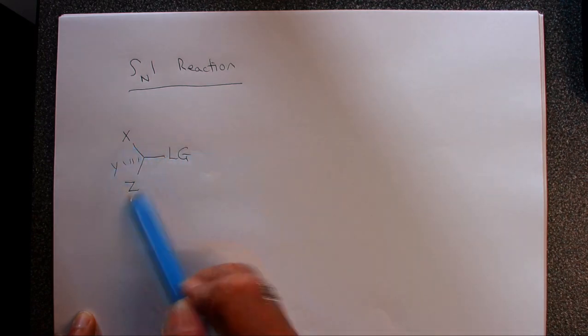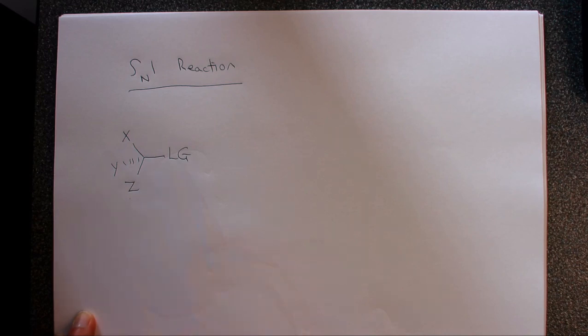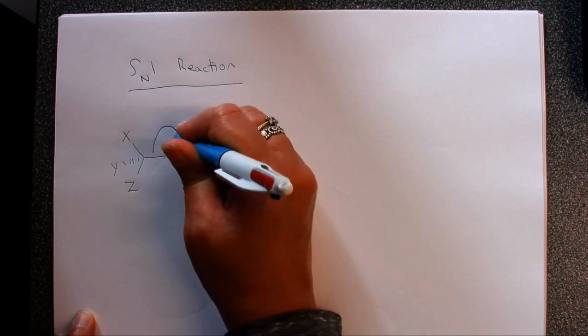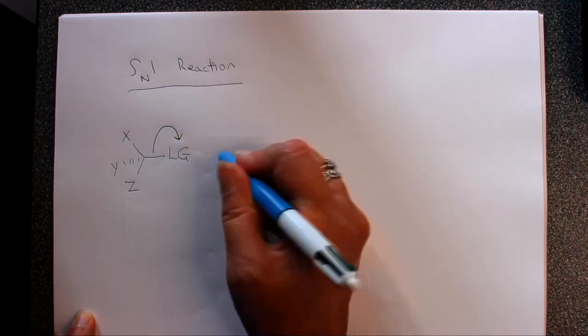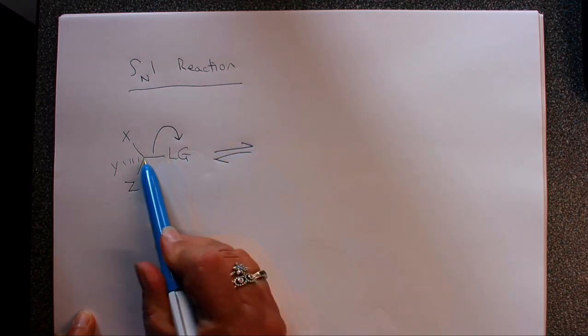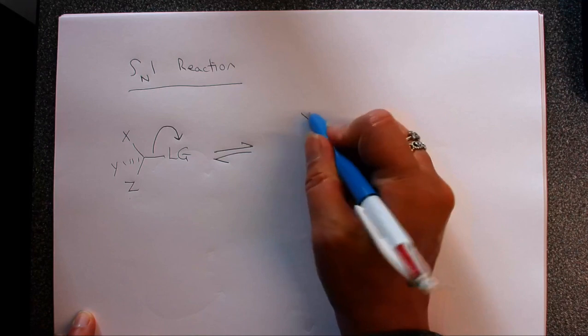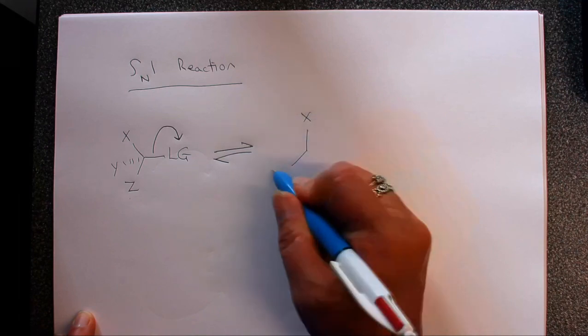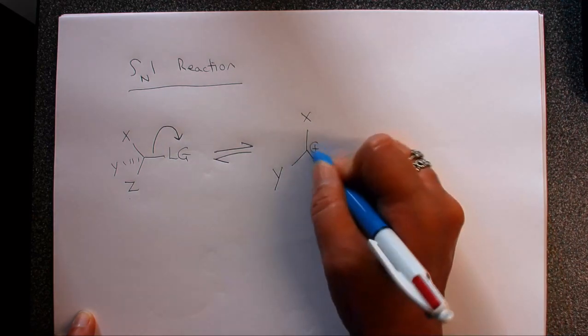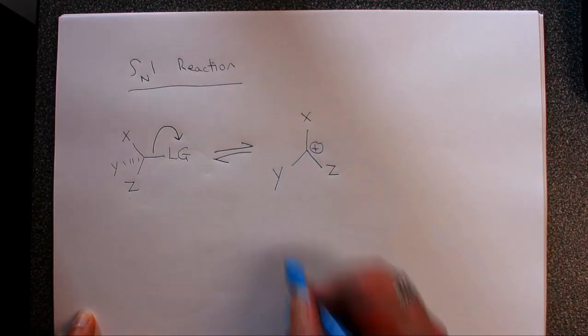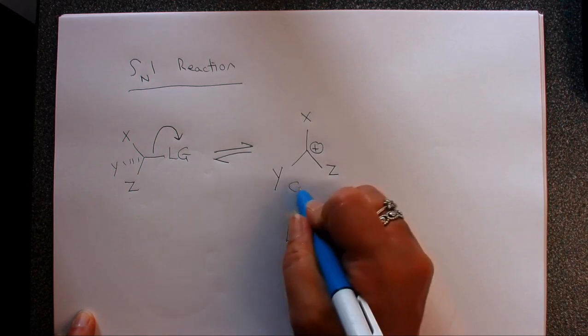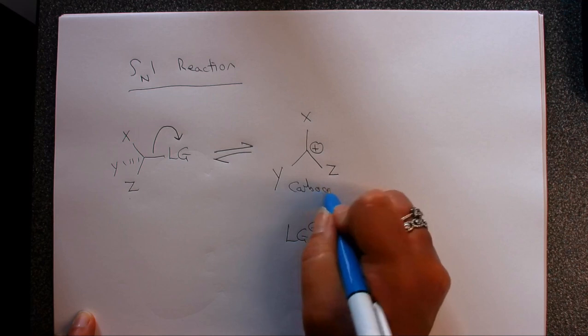In the first step of SN1, remember we lose our leaving group. We have our arrow showing the loss of the leaving group, and that will take us through to a positively charged carbocation. We can draw that again - we've got these three different groups X, Y, Z. It's positively charged because we've lost our leaving group, so we've got our leaving group separate. This is our carbocation intermediate.